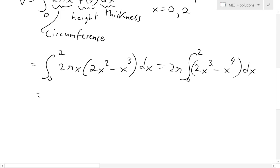And now we could just solve this further. Basically, now we just take the integral. So 2 pi, this is going to be x to the 4 over 4, and there's a 2 there, minus integral of x to the 4 is x to the 5 over 5 from 0 to 2.